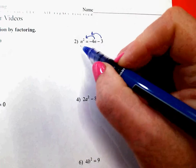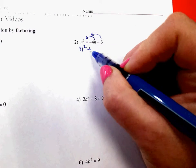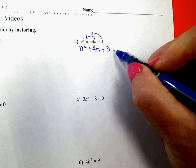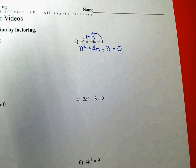So my first step is making it equal to zero. When I move the minus 4n over, it's going to turn positive, and the same with the minus 3. And now there's nothing left on the right-hand side, so my answer on the right-hand side is zero. It's in standard form, n squared, n, constant, and I'm ready to factor.